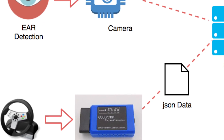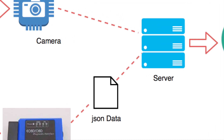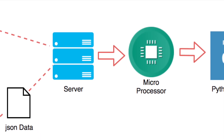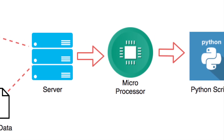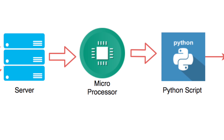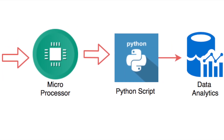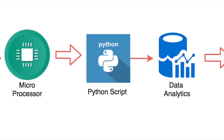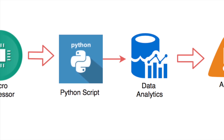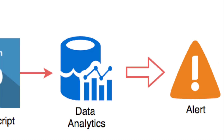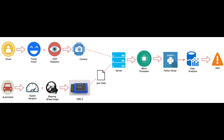The OBD uses Bluetooth transmission to send data to the server. The server holds all that data, which is then read through a JSON script and passed into a Python script where all analysis and data analytics are performed. The receiver module then analyzes everything, determines if the driver is sleepy, and raises an alert. The alert can be sent to anyone you choose, and the system can even sprinkle water on the driver's face if desired.